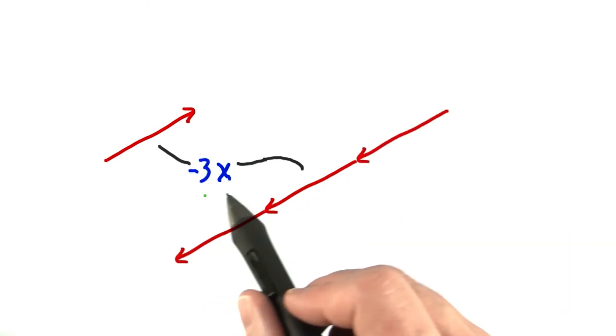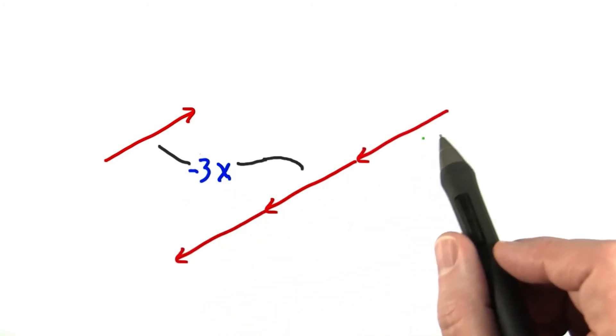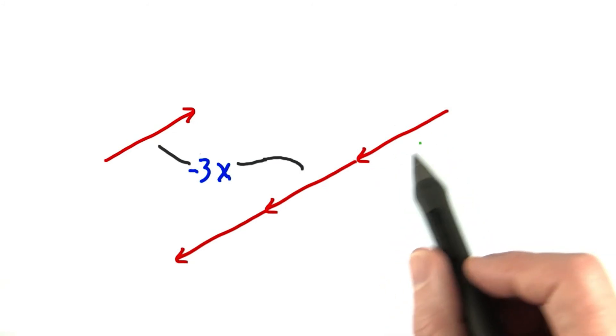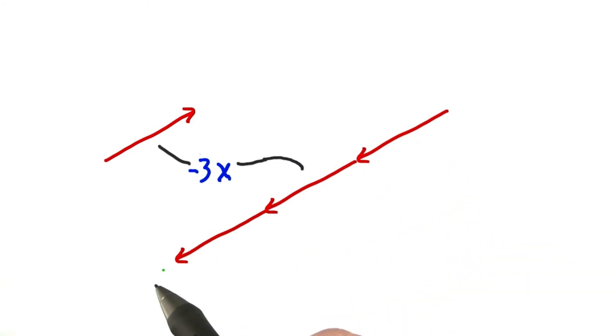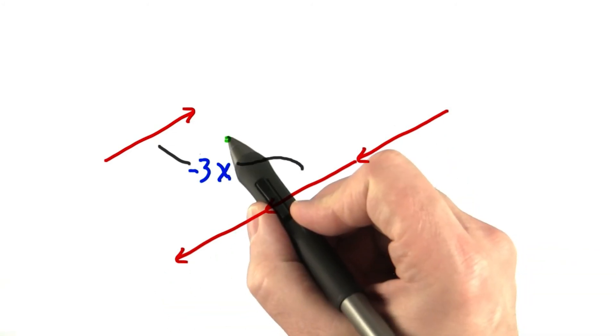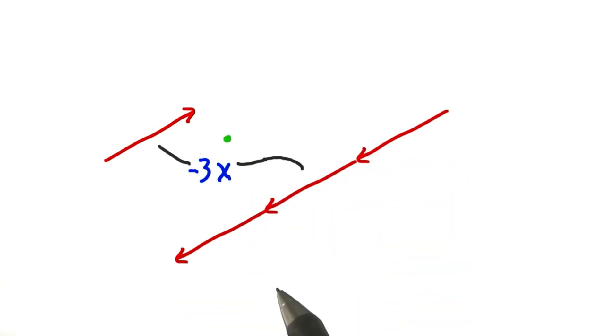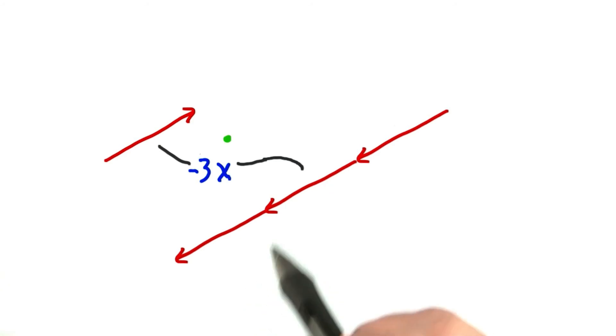Multiply by a different negative number, and you reverse the direction and change how far to move. Multiplying a point by a number is a way to make an object larger or smaller.